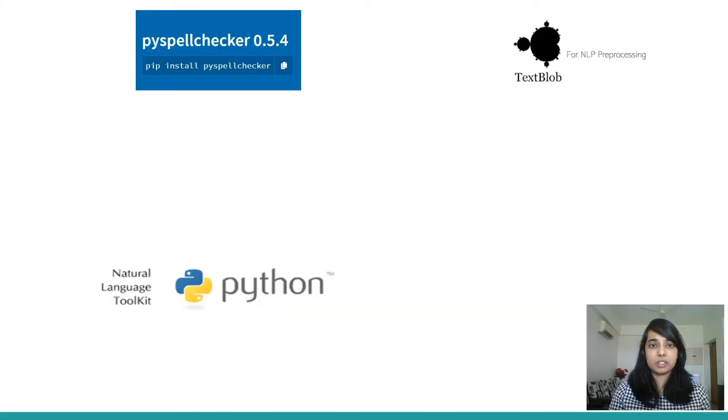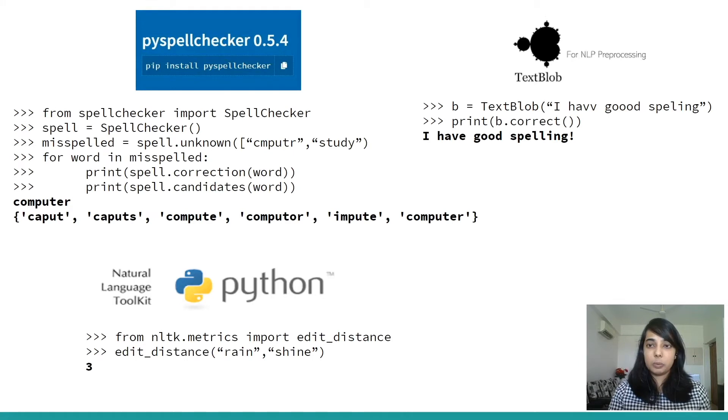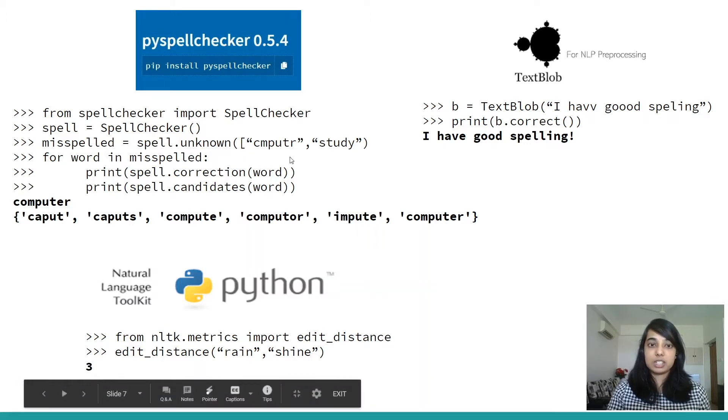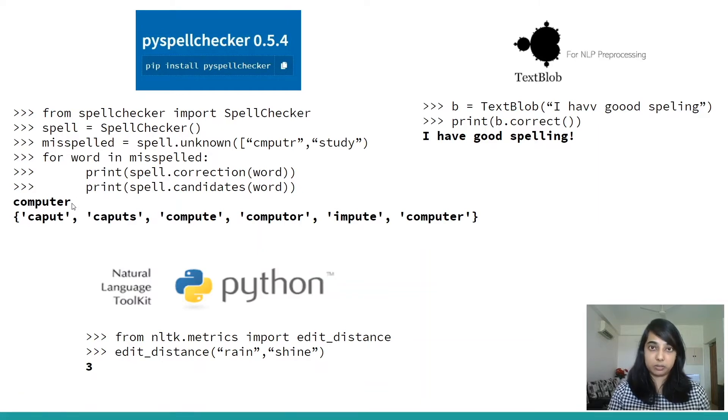There are Python packages already like pyspellchecker, textblob, nltk which already have functionalities like the correct function or the unknown function or the edit distance function where you need to give the strings and it corrects it for you. But there are these algorithms which depend on edit distance which run behind and we will understand how it changes 'cmputr' and how it is able to detect the word 'computer' out of that.